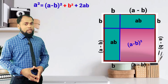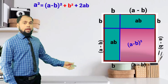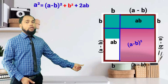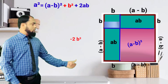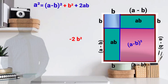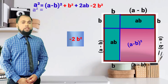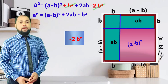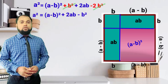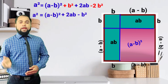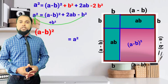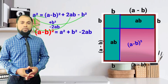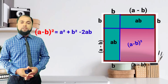We included the area of the smaller square two times, so we need to subtract it — that is minus 2b squared. So: a squared equals (a minus b) whole square plus 2ab minus b squared. Rearranging, (a minus b) whole square equals a squared plus b squared minus 2ab. This is how we prove the identity.